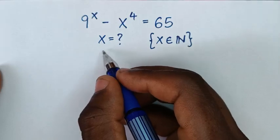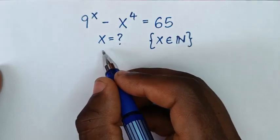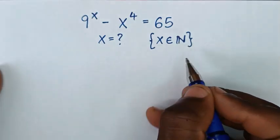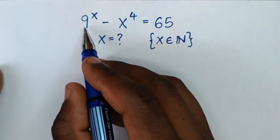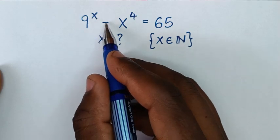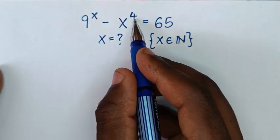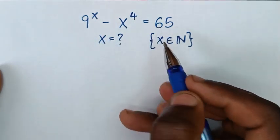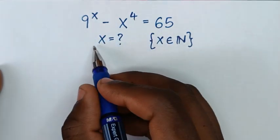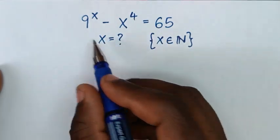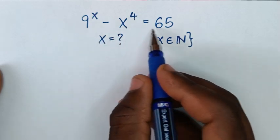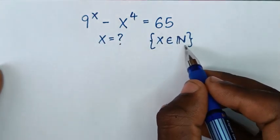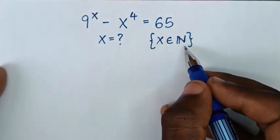Hello, you are welcome to solve this math problem, which is 9 power x minus x power 4 is equal to 65. To find the value of x from this equation, such that x is an element of the natural numbers.